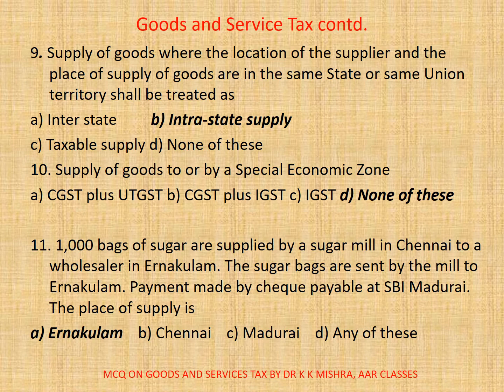Question 11: Thousand bags of sugar are supplied by a sugar mill in Chennai to a wholesaler in Arnaquilam. The sugar bags are sent by the mill to Arnaquilam. Payment made by cheque payable at SBI Madurai. The place of supply is — A. Arnaquilam, B. Chennai, C. Madurai, D. any of these. Here correct option is A: Arnaquilam.